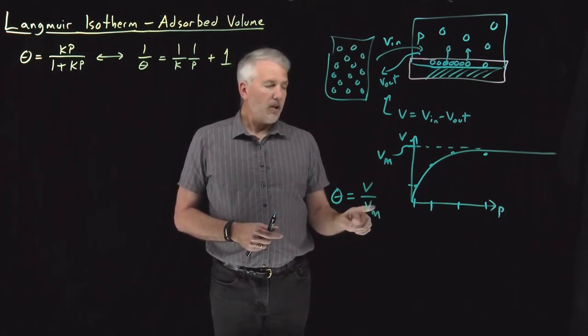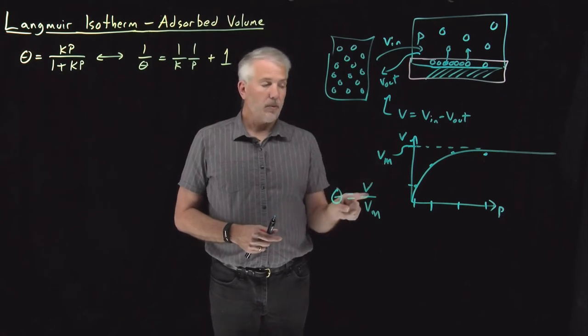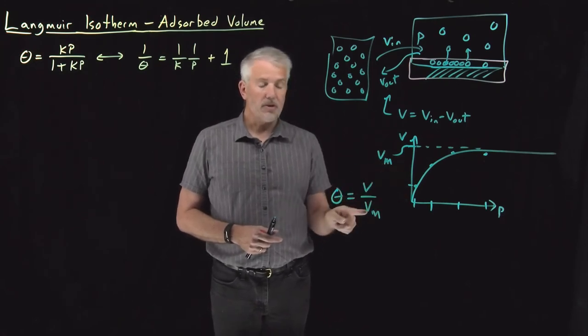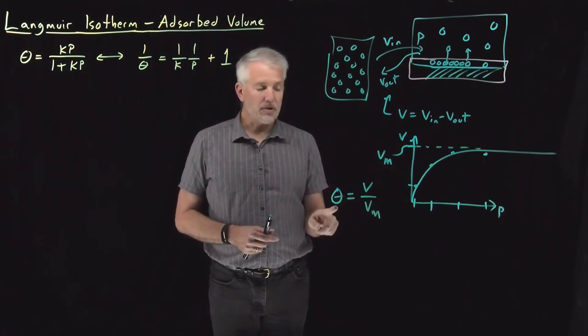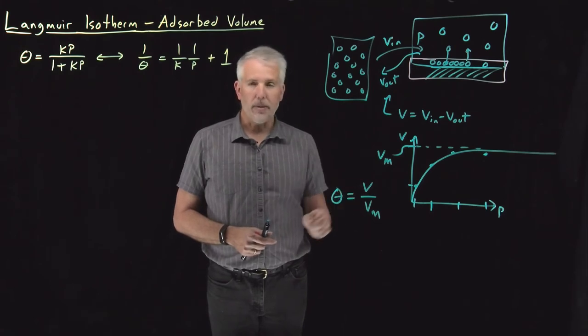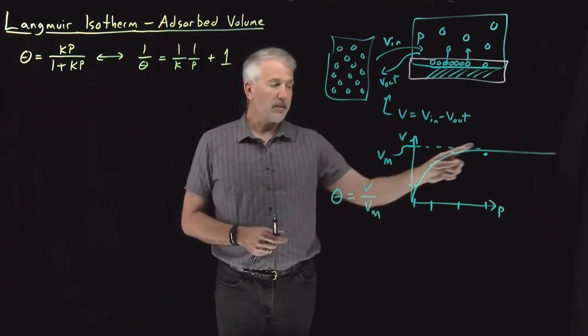So now, once we've measured V sub m, we can use the measurements of volume to determine the surface coverage. So we don't measure surface coverage directly. We get it indirectly by measuring adsorbed volume at several different conditions.